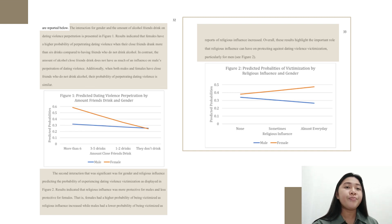Now, the second interaction that was significant was for gender and religious influence predicting the probability of experiencing dating violence victimization as displayed in figure number 2. Results indicated that religious influence was more protective for males and less protective for females. That is, females had a higher probability of being victimized as religious influence increased,